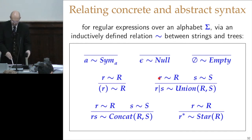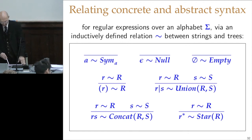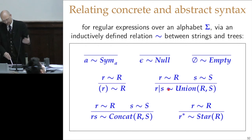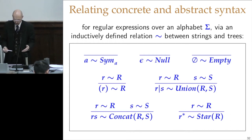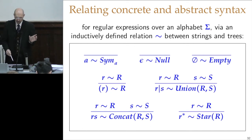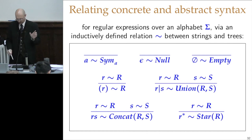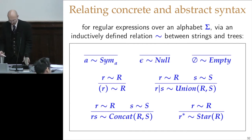If there is a string r which matches the tree r, and there is another string that matches another tree s, then the regular expression — the concrete syntax obtained by concatenating them with a vertical bar — is related to the tree obtained by applying the union operator to the two trees. This doesn't say anything about what strings the regular expressions match. It just gives you rules for matching strings over the alphabet sigma plus the meta symbols that represent the concrete syntax for regular expressions to trees, which are the abstract syntax for the same regular expressions.